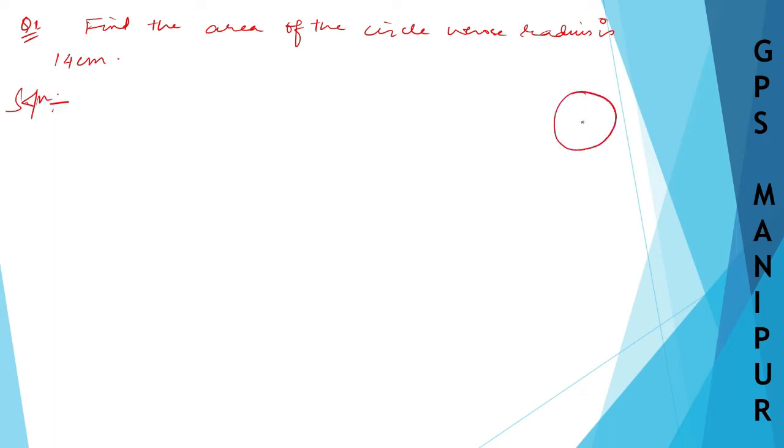Solution: The question is talking about the area of the circle. Suppose this is a circle and this is the radius. Then the area of the circle is π r squared. This is the formula for area of the circle. So let us find out the answer.